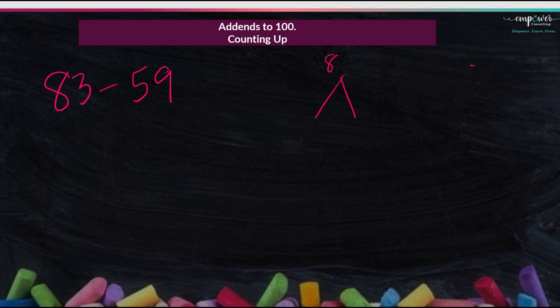So we have 83 as our total. This is a total. This is a partner. And we are looking for our other partner. So I have 59 as my partner. I want to know what this is. And how might students use this problem to think through solving for my unknown partner? So I might say, I might have a student that says, well, I know that 59 and I add 1, I get to 60.